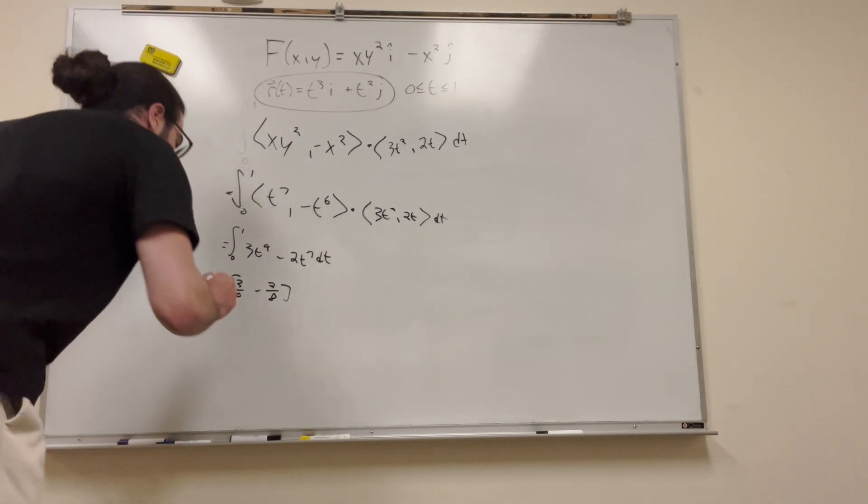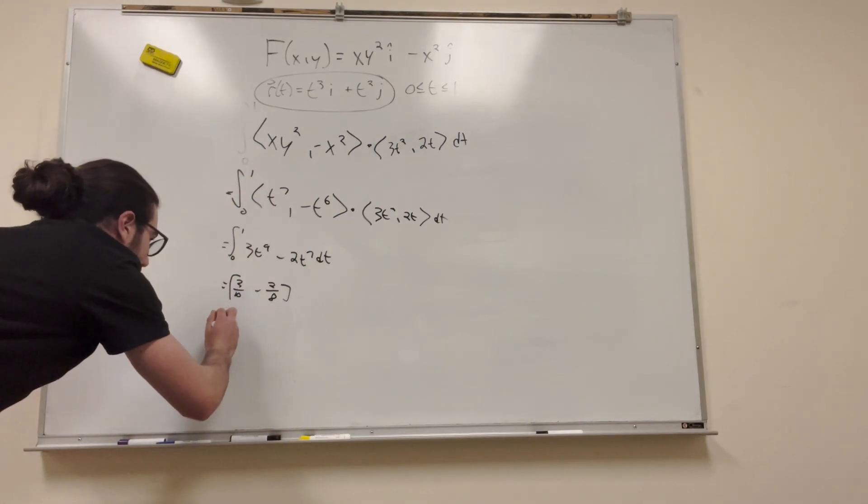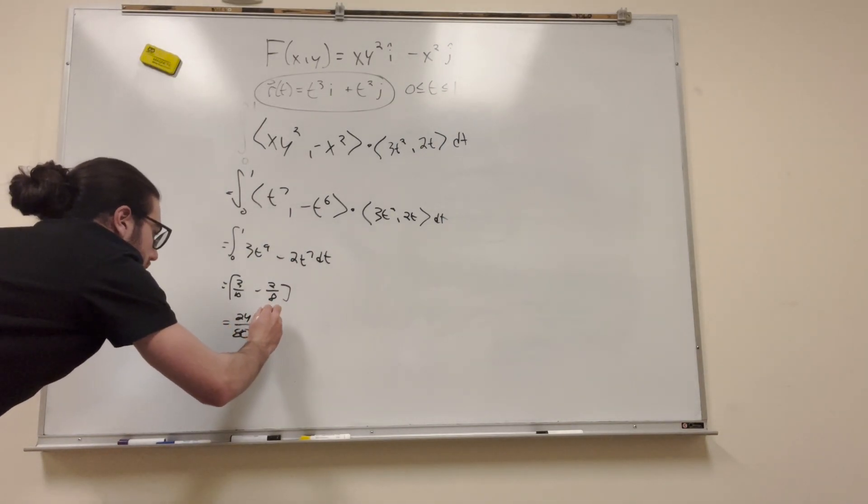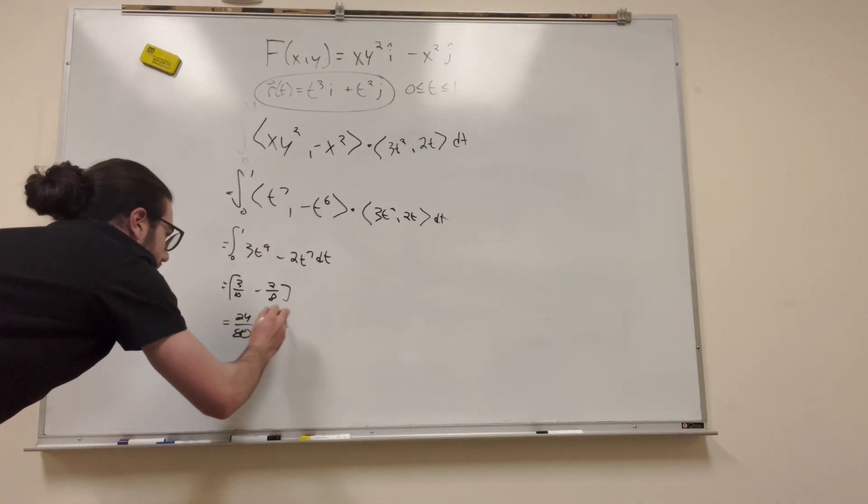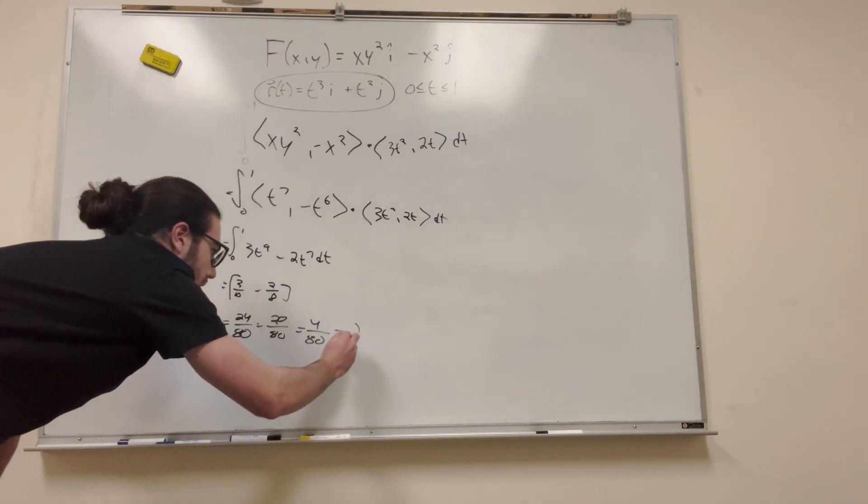Alright, now we just got some fractions to work with. We're going to do this. Alright, so let's just multiply by a common denominator. So, multiply this by 8, so it's going to be 24 over 80 minus 20 over 80. Not equal to, it's minus. So, that's going to be equal to 4 over 80, or that is equal to 1 over 20. And that is our answer.